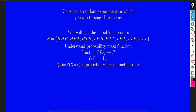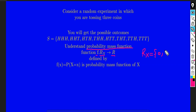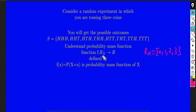To understand the probability mass function, you should know what it is. The probability mass function, or distribution function, of random variable X is defined as a function from Rx to R, where Rx is the range of X containing elements 0, 1, 2, and 3, and R is the set of real numbers. It is defined by F(x) equals the probability that X equals x.